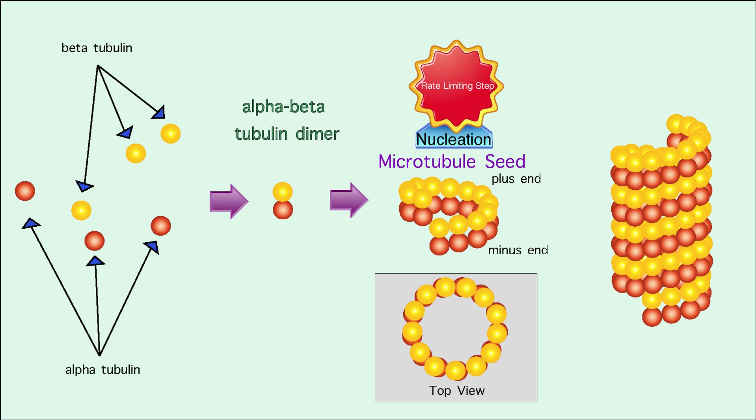Once the seed has formed, more dimers can quickly stack onto the ring from either side. However, for reasons that we will explain later, the microtubules in our cells generally lengthen only from the plus end.